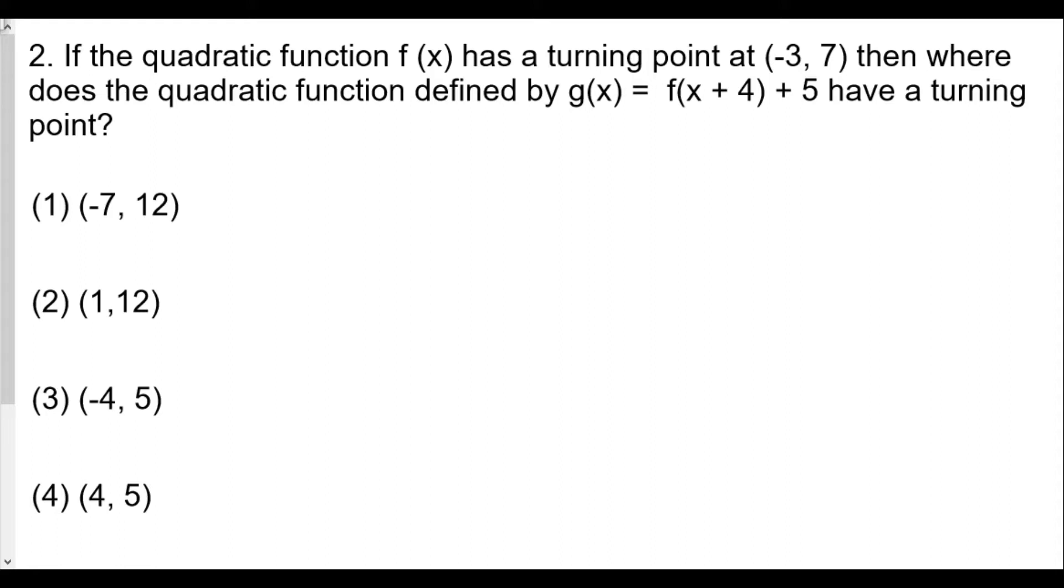So we start question number two. What type of transformation do we have here? It looks like (x, y) is going to be transformed. We see here x minus 4 means shift left four units, and then we see plus 5 means shift up five units.